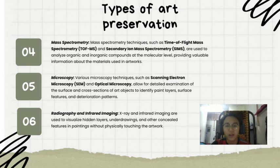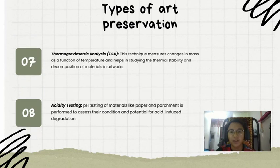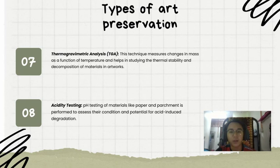Number six is radiographic and infrared imaging — X-ray and infrared imaging are used to visualize hidden layers, underdrawings, and other concealed features in paintings without physically touching the artwork. Number seven is thermogravimetric analysis, which measures changes in mass as a function of temperature and helps in studying the thermal stability and decomposition of materials in artwork. Lastly, number eight is acidity testing — pH testing of materials like paper and parchment is performed to assess their condition and potential for acid-induced degradation.